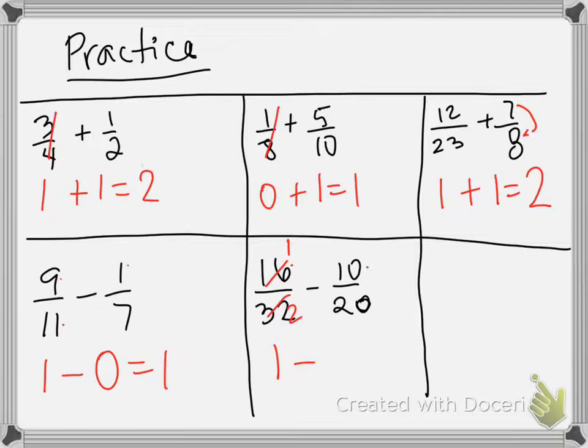Then 16/32: 16 is a half of 32, so this is 1/2, and 1/2 rounds to 1. And 10/20: 10 is a half of 20, that's 1/2, which rounds to another 1. The last one is blank for practice. This is a lot of practice, so take your notes, go over each example, and try to understand why I chose each fraction to be 1 or 0.